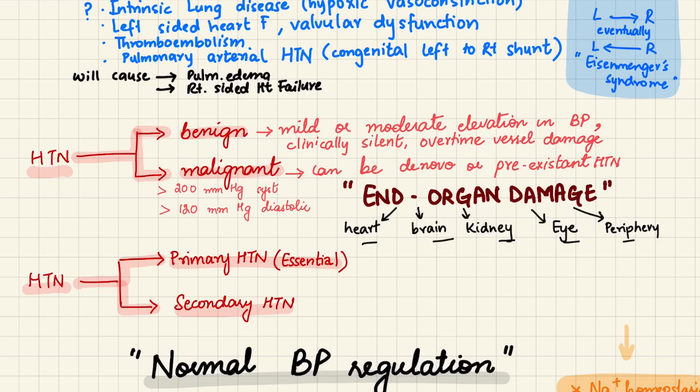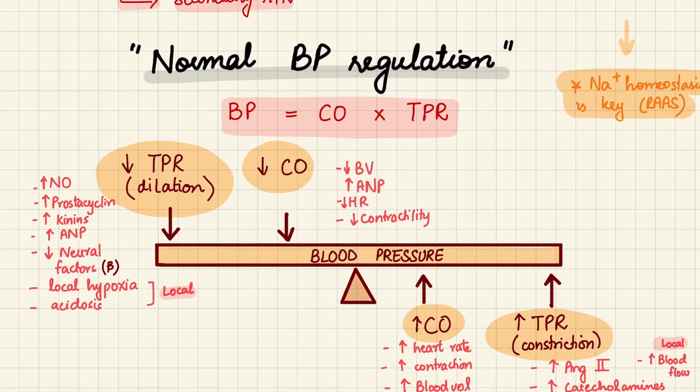End-organ damage includes damage to the heart, brain, kidney, eye, and the periphery. Hypertension can also be classified as primary and secondary. Primary hypertension, also known as essential hypertension, is idiopathic — we cannot identify the exact cause — while secondary hypertension has a specific identifiable cause.